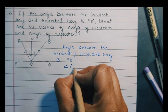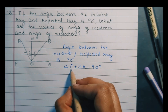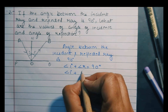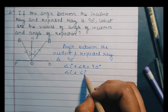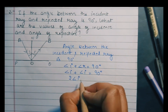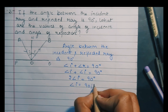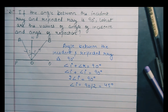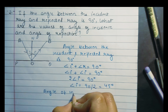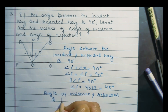Angle of incidence plus angle of reflection is equal to 90 degrees. Since angle of incidence and angle of reflection are equal, we can write angle of incidence plus angle of incidence equals 90 degrees. Twice the angle of incidence equals 90 degrees, so the angle of incidence is 90 divided by 2, which is 45 degrees. The angle of incidence and reflection is 45 degrees.